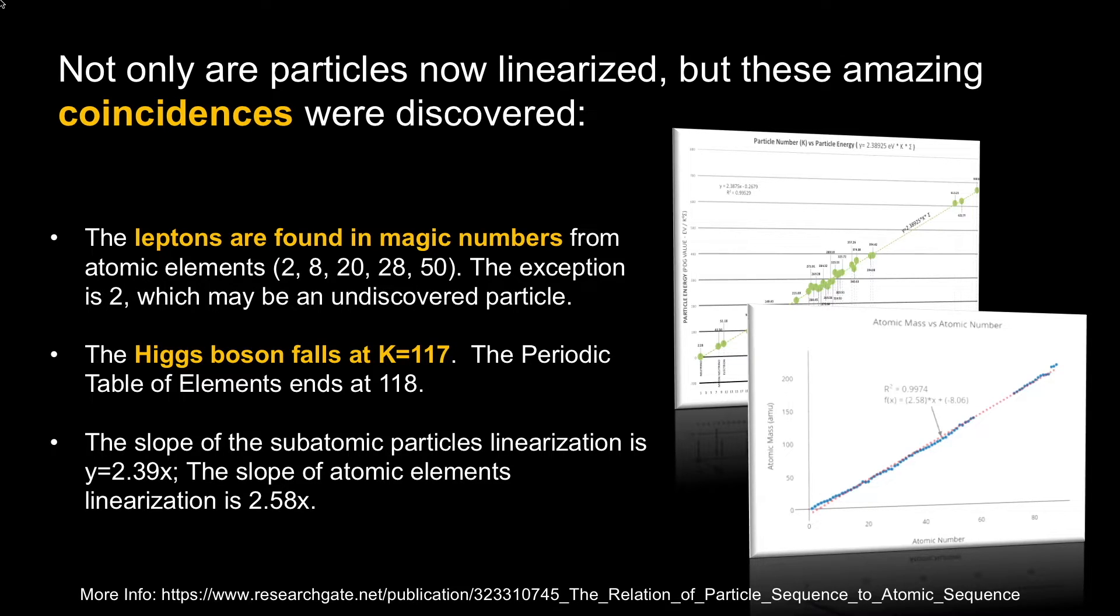The Higgs boson falls nearly at the end of the periodic table. The slopes are nearly the same, roughly about 2.4x and 2.6x. There's a lot of similarities between these.